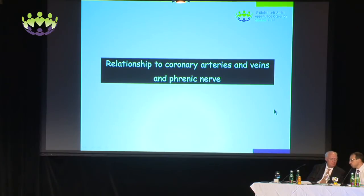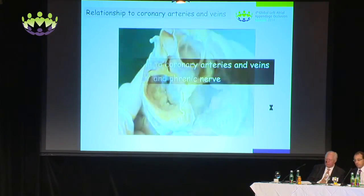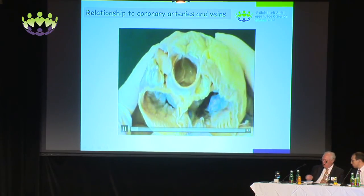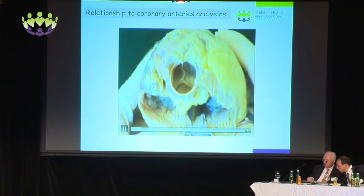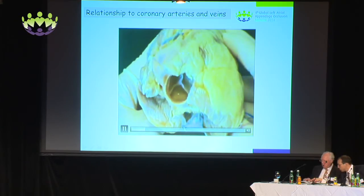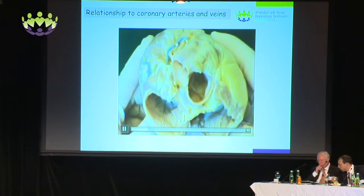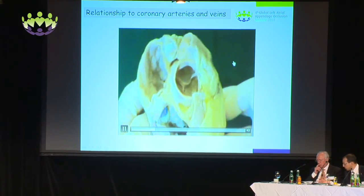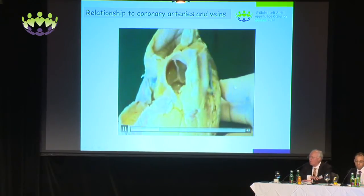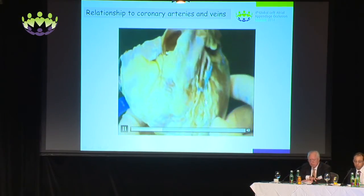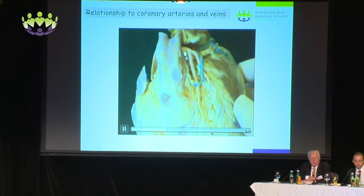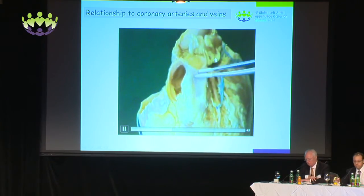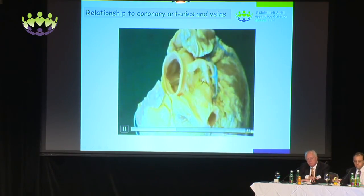Now, relationship to coronary arteries, veins, and the phrenic nerve. This movie shows us looking down from the atrial side — the left atrial appendage, with the tip waving over the top of the pulmonary trunk here. And as we turn around, we can see the great cardiac vein coloured in blue, and the left anterior descending coloured in pink. Turning the heart around and viewing from the front: the great cardiac vein coming up here, the left anterior descending and circumflex arteries, and overlying these structures, the left atrial appendage.